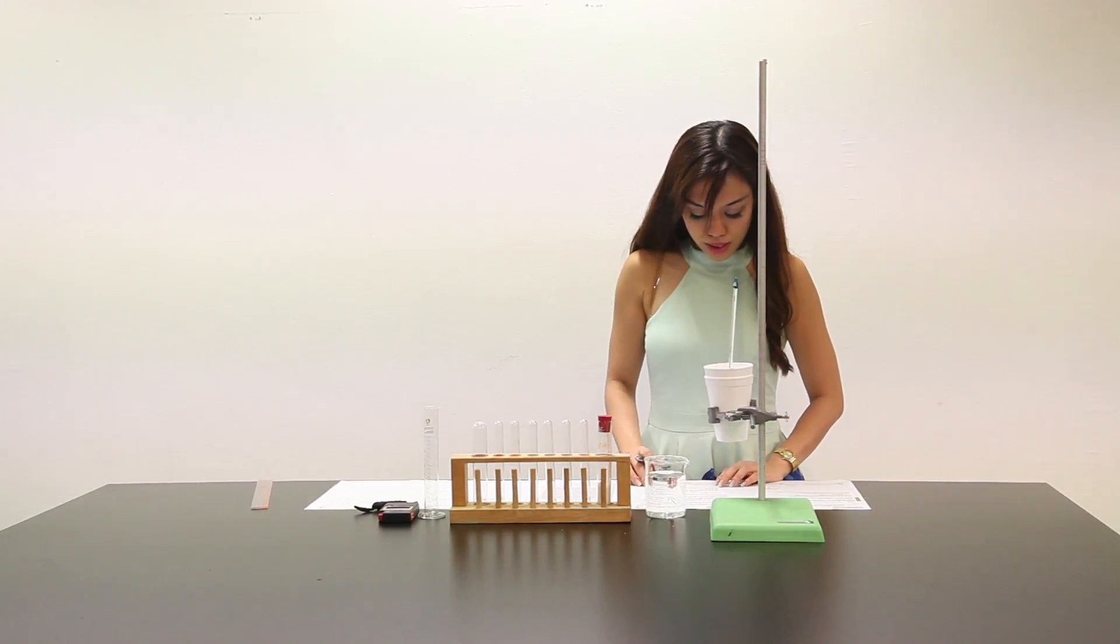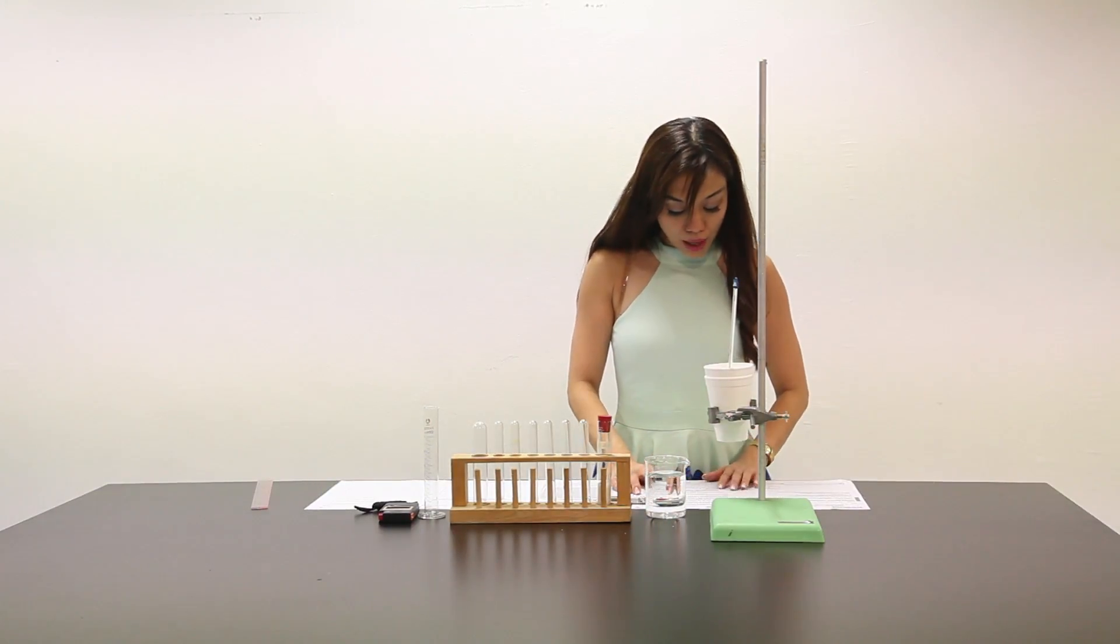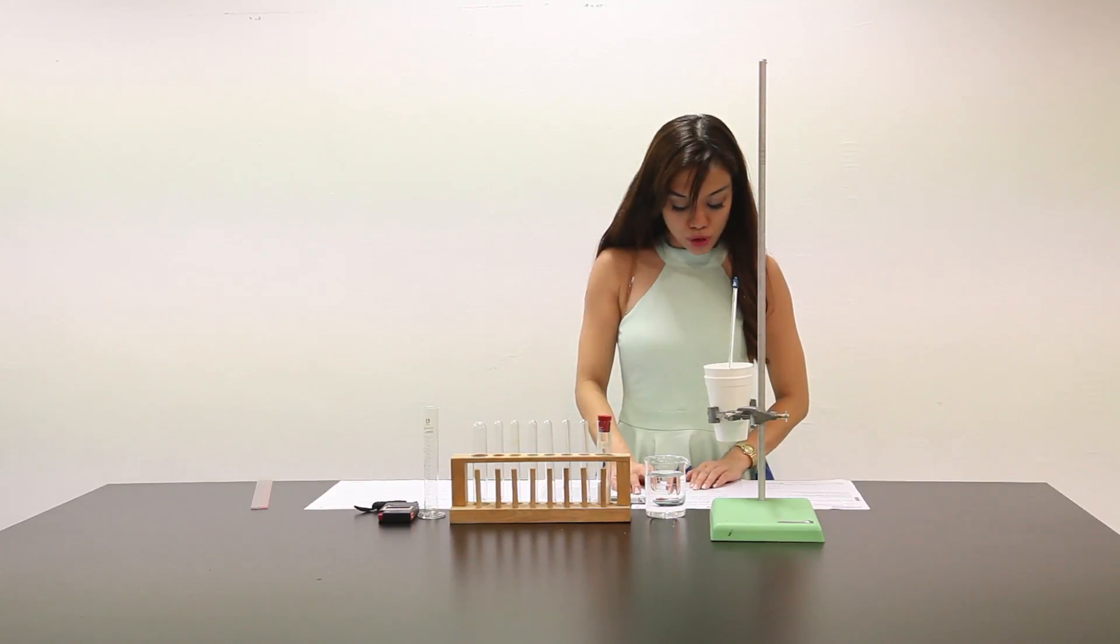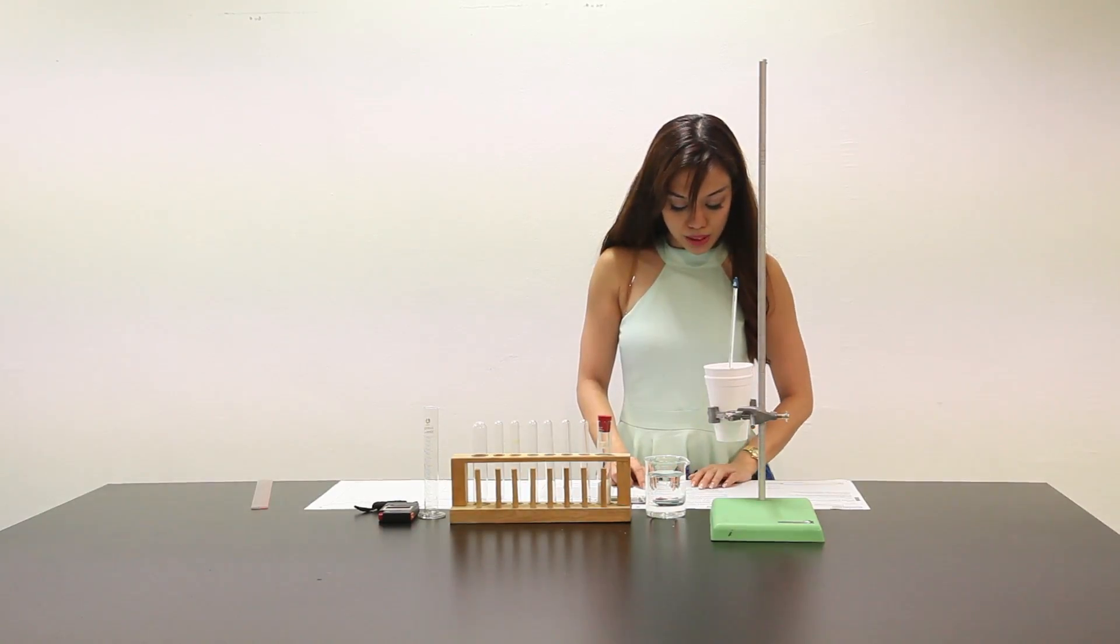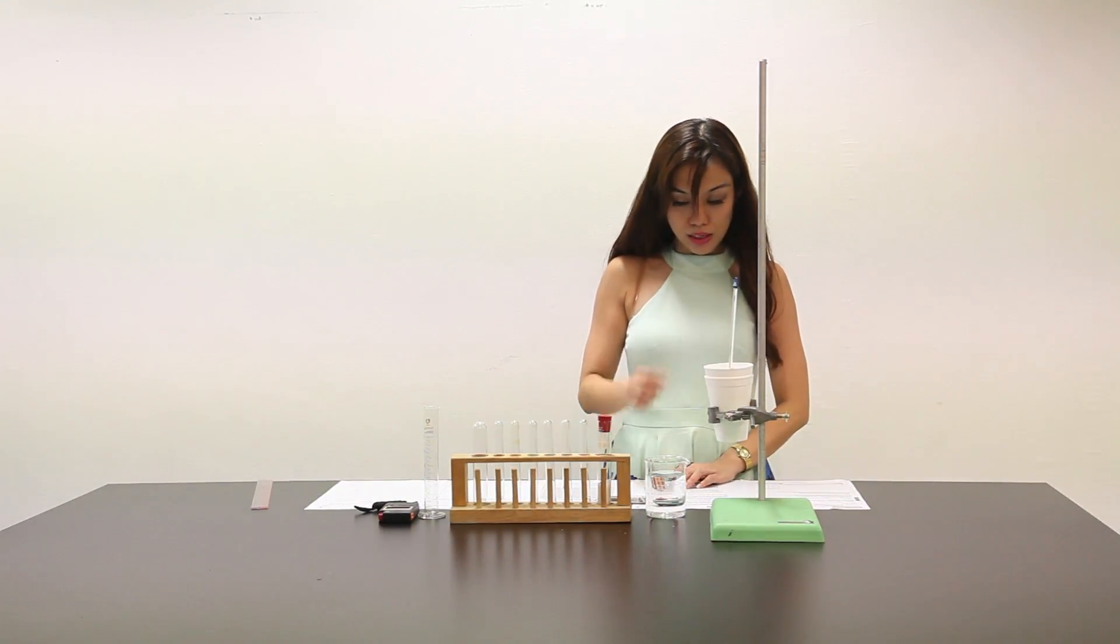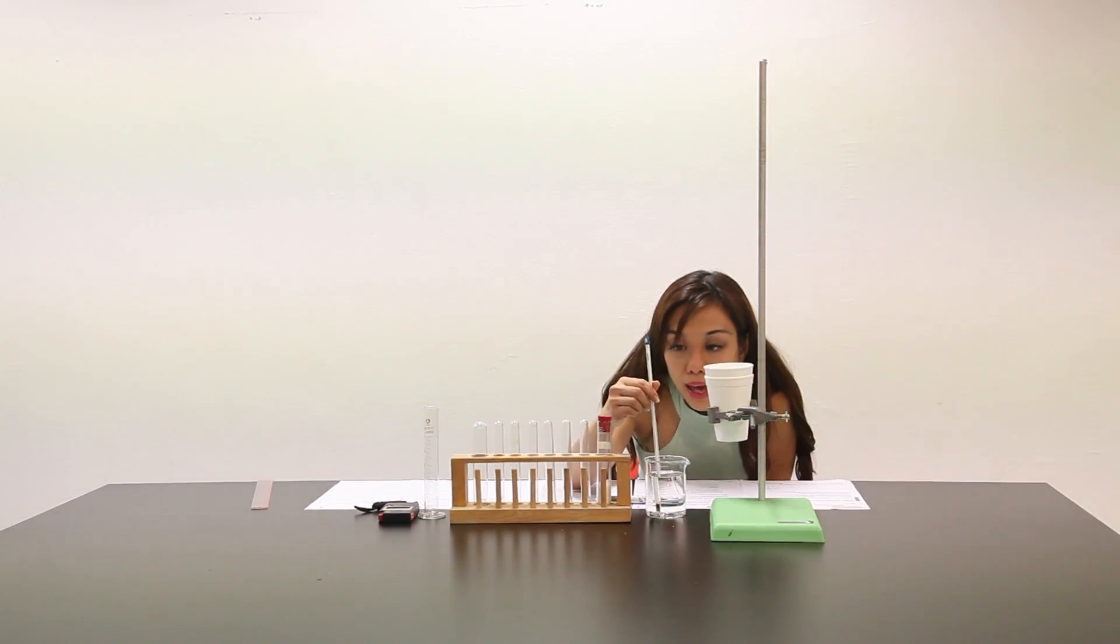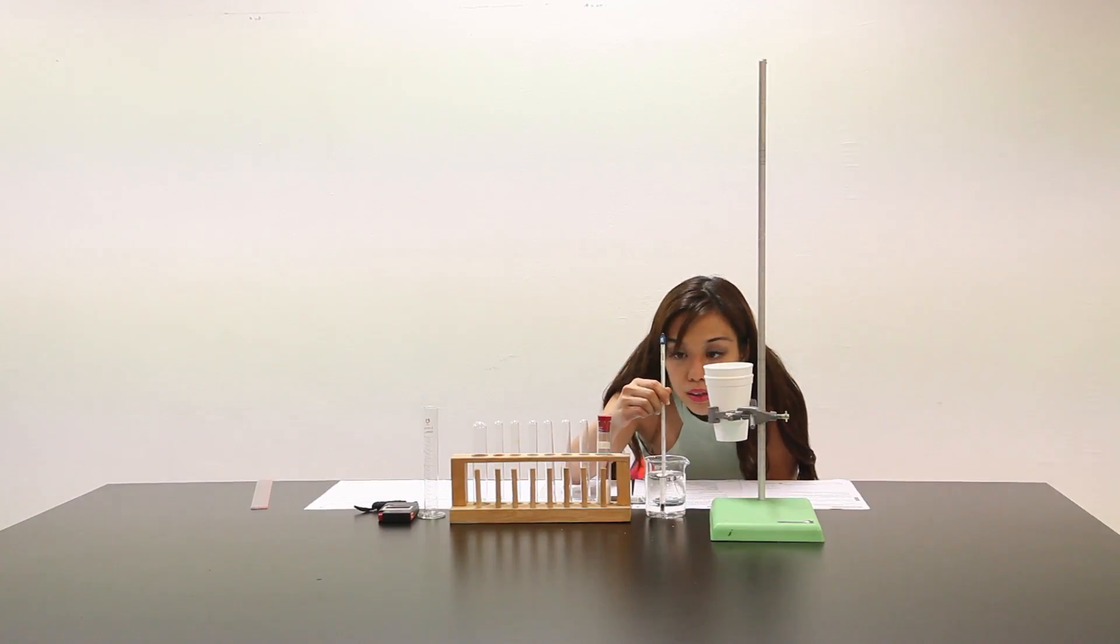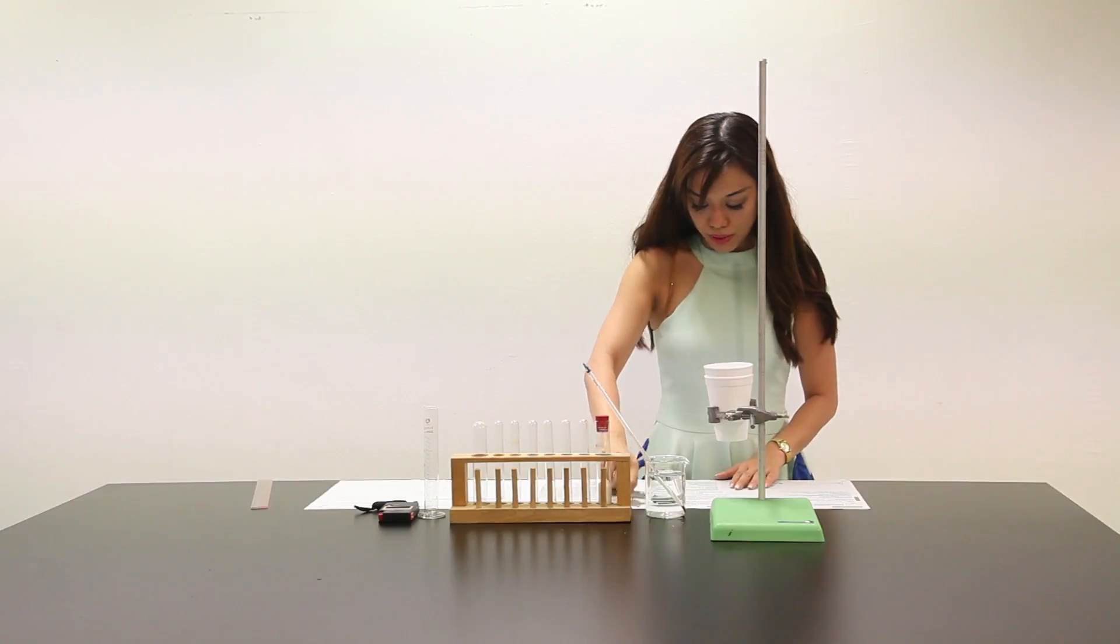Fill half a 250 cm³ beaker with water. Measure the temperature of this water and if necessary use the hot or cold water provided to adjust the temperature so that it is between 25 degrees Celsius and 30 degrees Celsius. I'm going to measure the water over here. It is around 25 degrees Celsius. So I would let it be at 25 degrees Celsius.